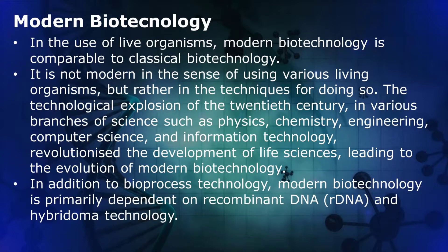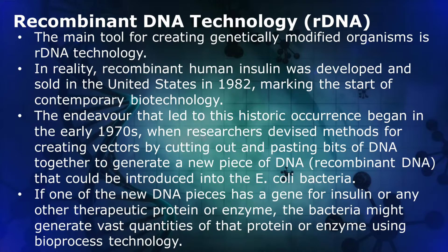In addition to bioprocess technology, modern biotechnology is primarily dependent on recombinant DNA and hybridoma technology. The main tool for creating genetically modified organisms is recombinant DNA (R-DNA) technology. Recombinant human insulin was developed and sold in the United States in 1982, marking the start of contemporary biotechnology. This began in the early 1970s when researchers devised methods for creating vectors by cutting out and pasting bits of DNA together to generate recombinant DNA, which could be introduced into E. coli bacteria.